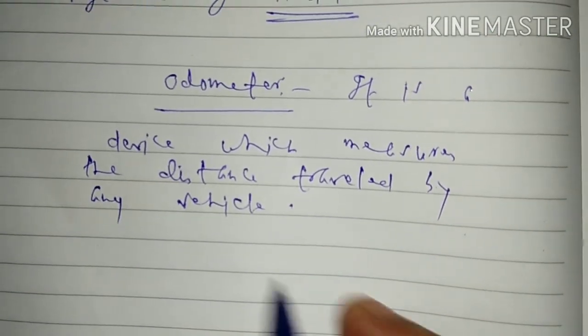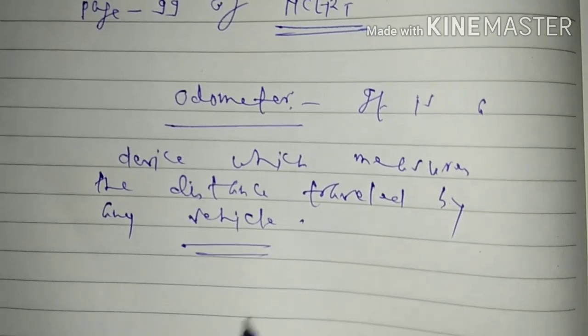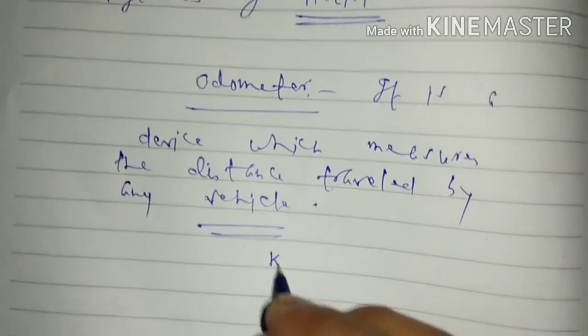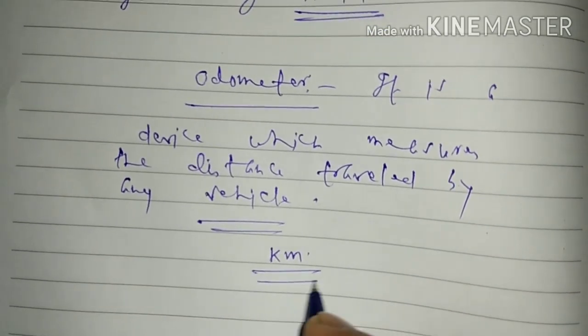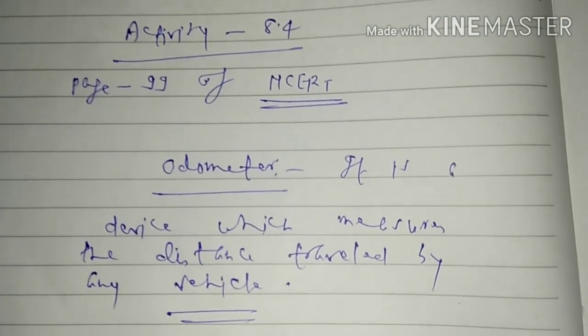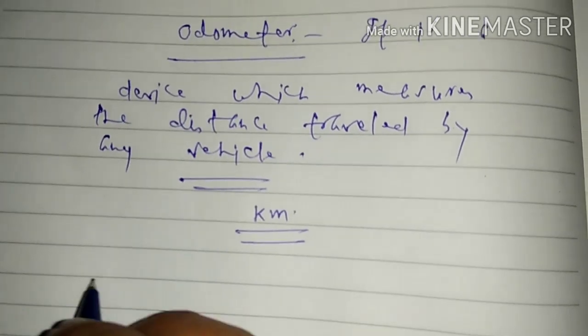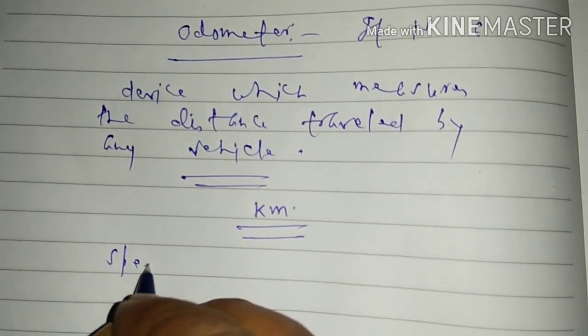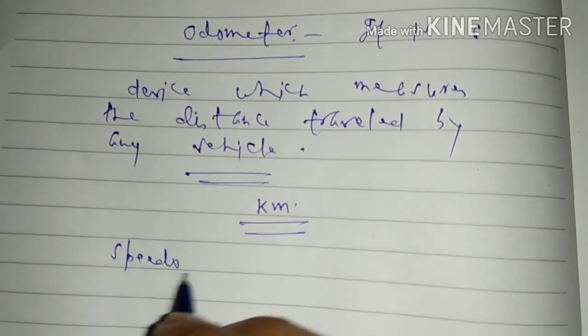Usually it measures distance in kilometers which is further continuously measured in meters also. The second thing is speedometer.